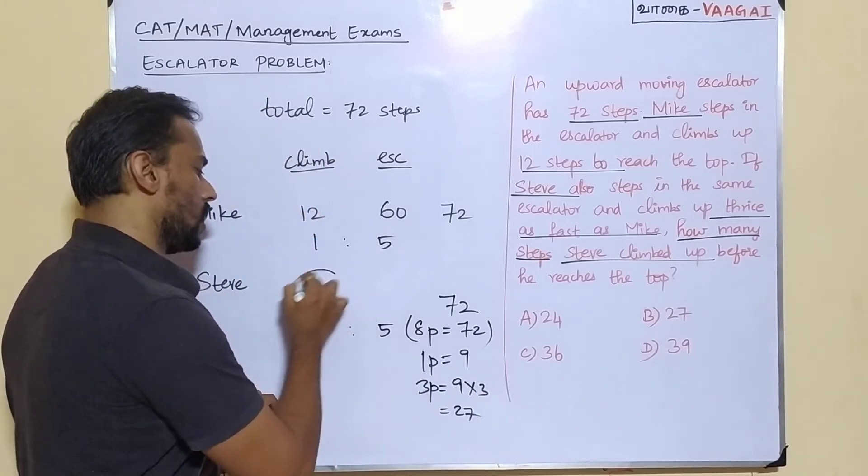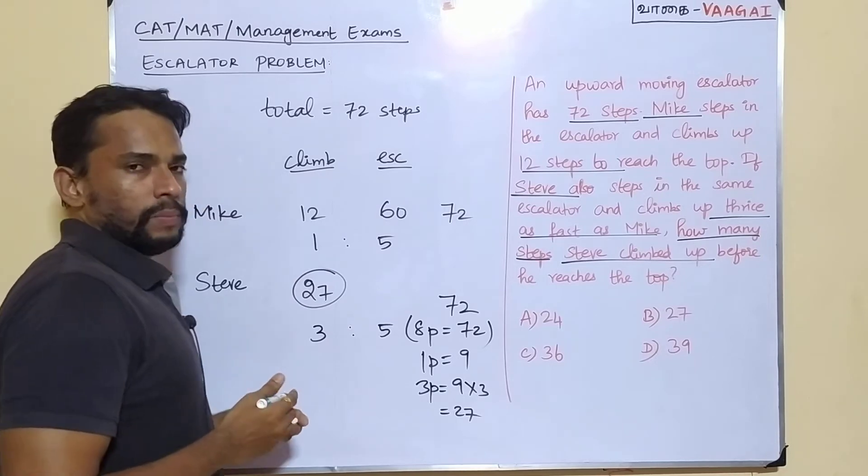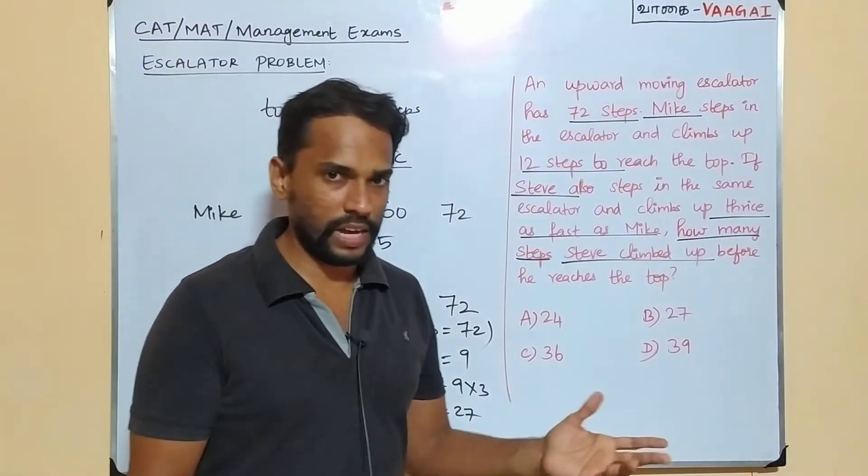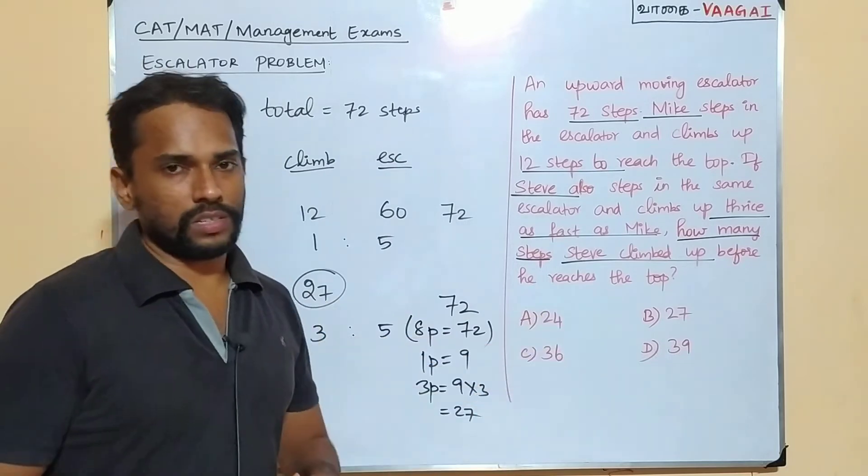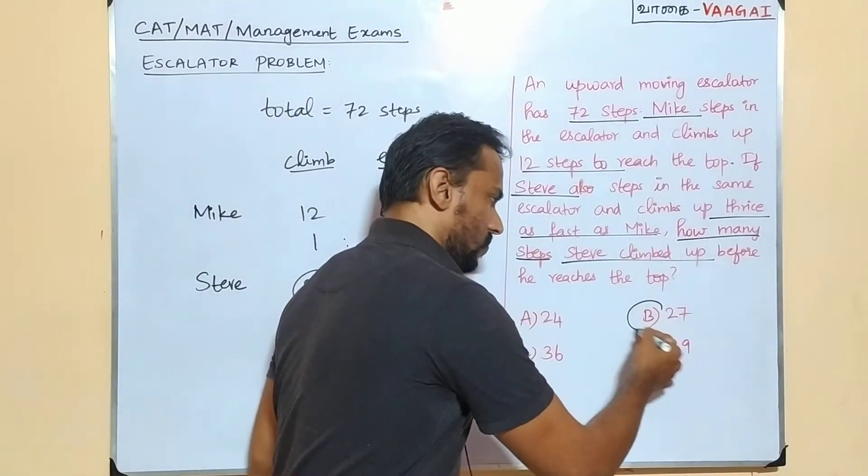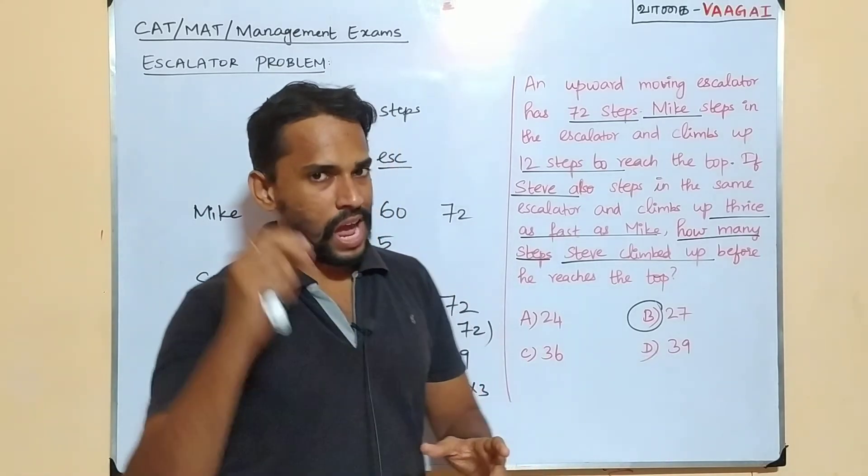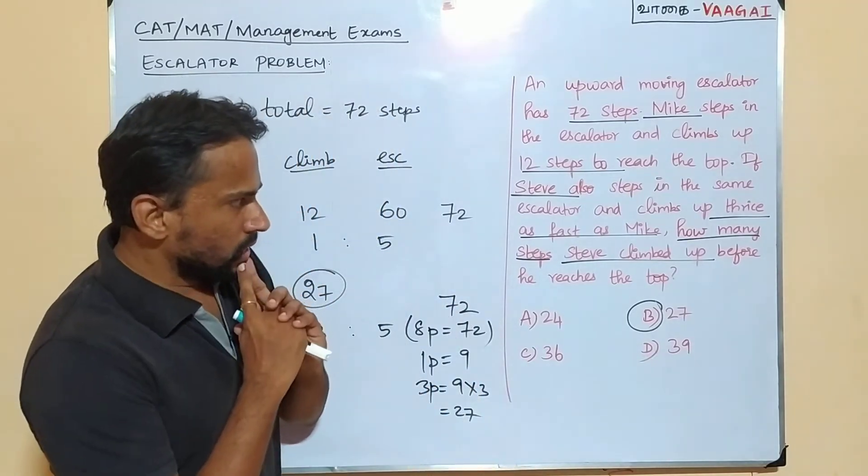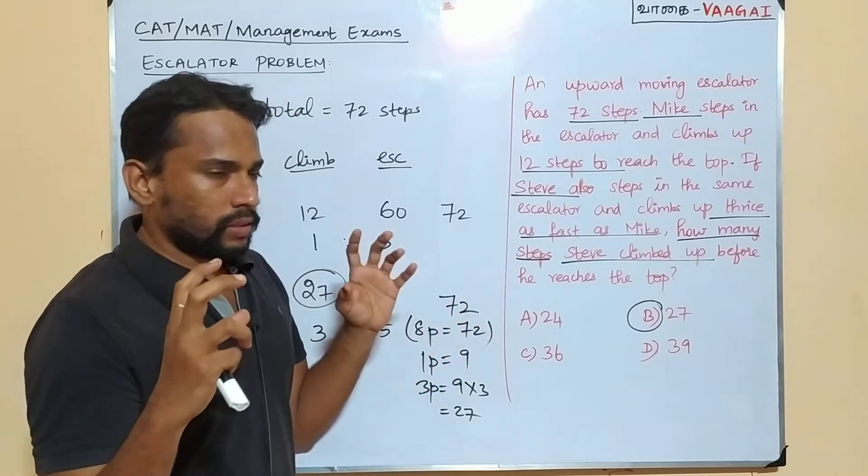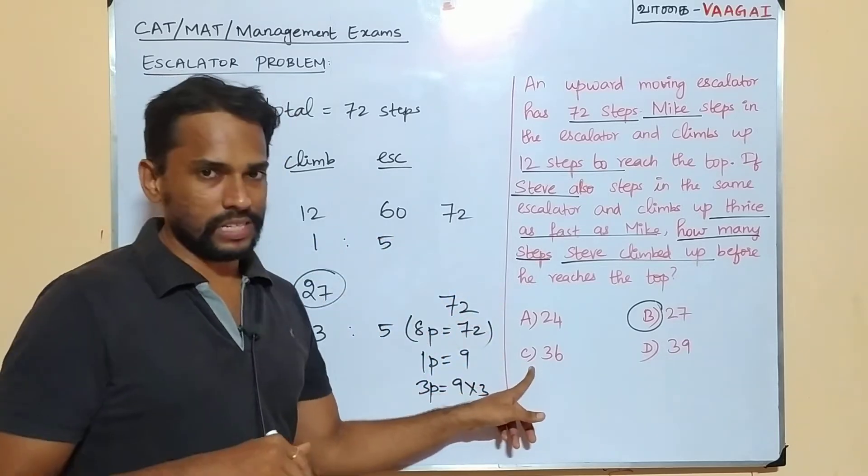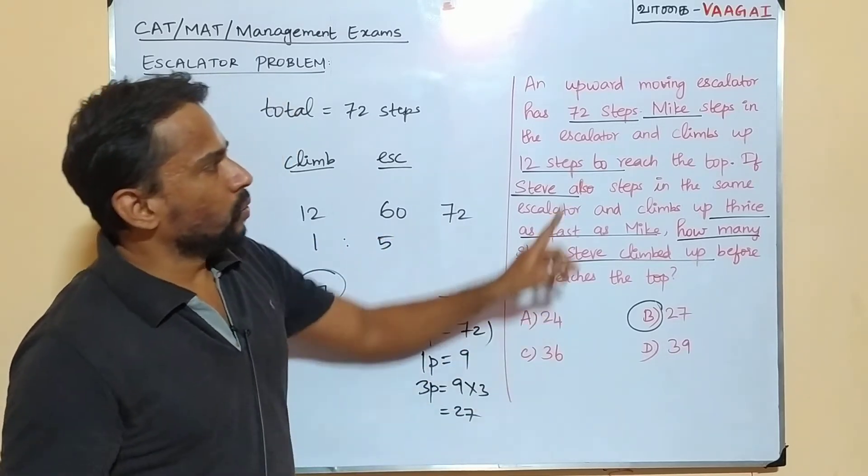So 27 steps. Steve will be climbing up 27 steps to reach the top. That's going to be the answer. And our answer is ready, available at option B. Option B 27 is going to be the answer for this interesting question. I hope you enjoyed this question. And one more thing here, the important, the very frequent trap that you can see here is this option 36. I'll tell why.